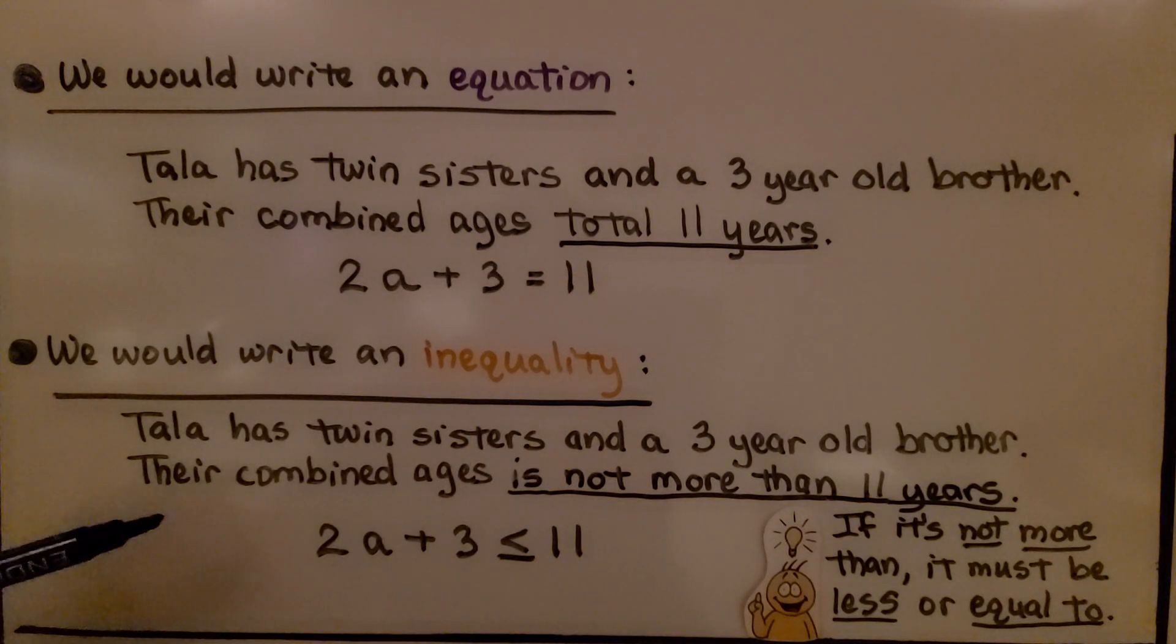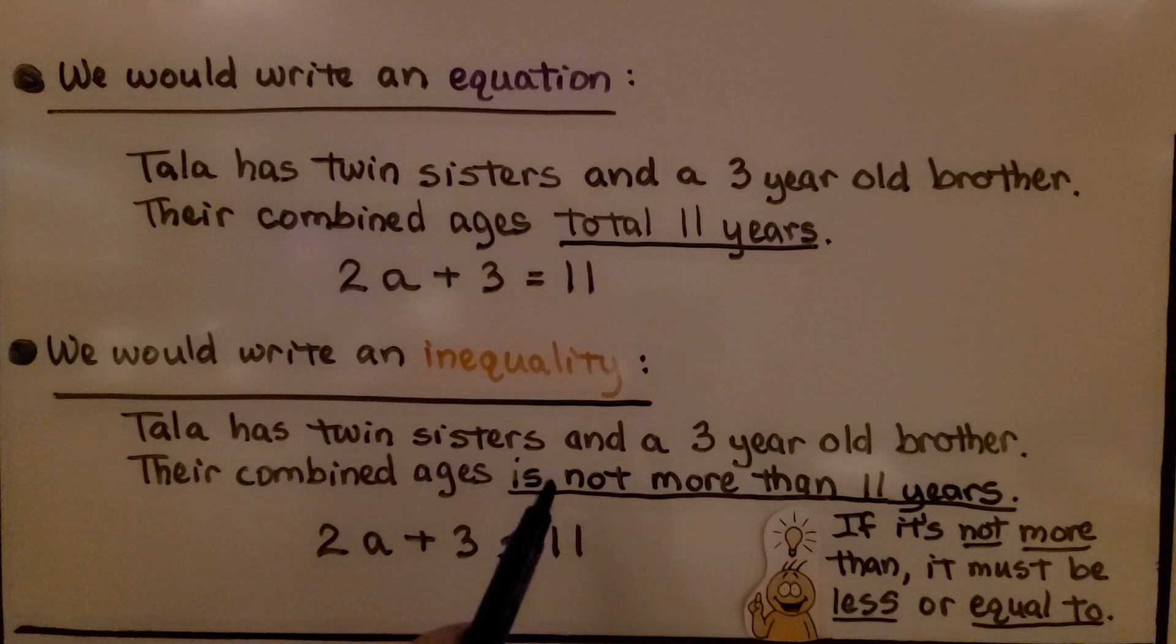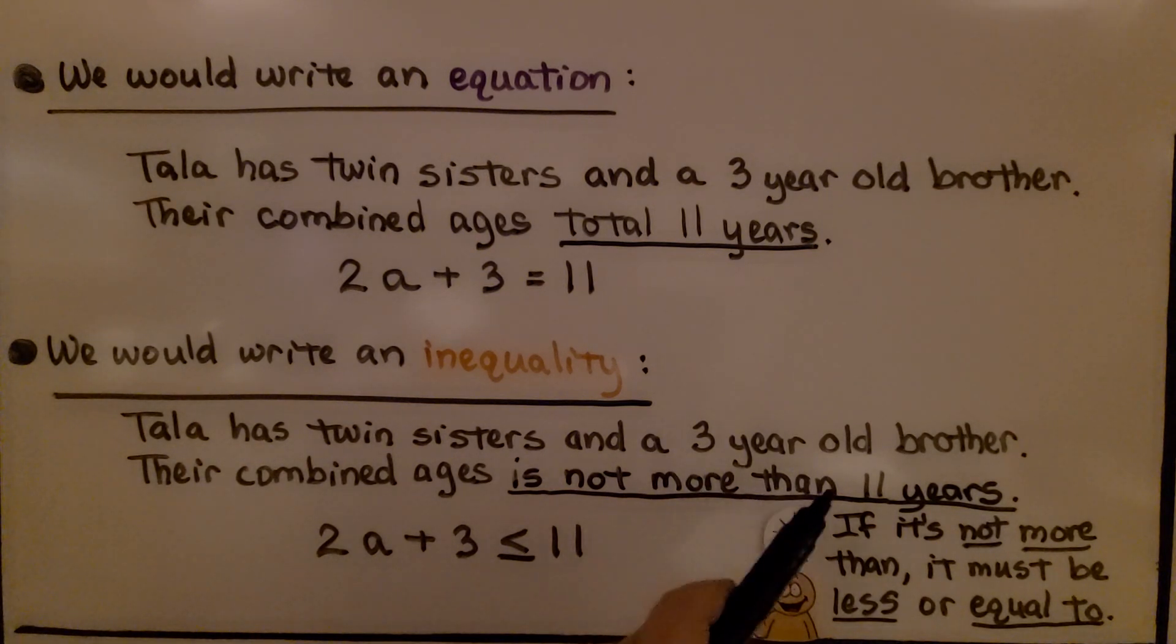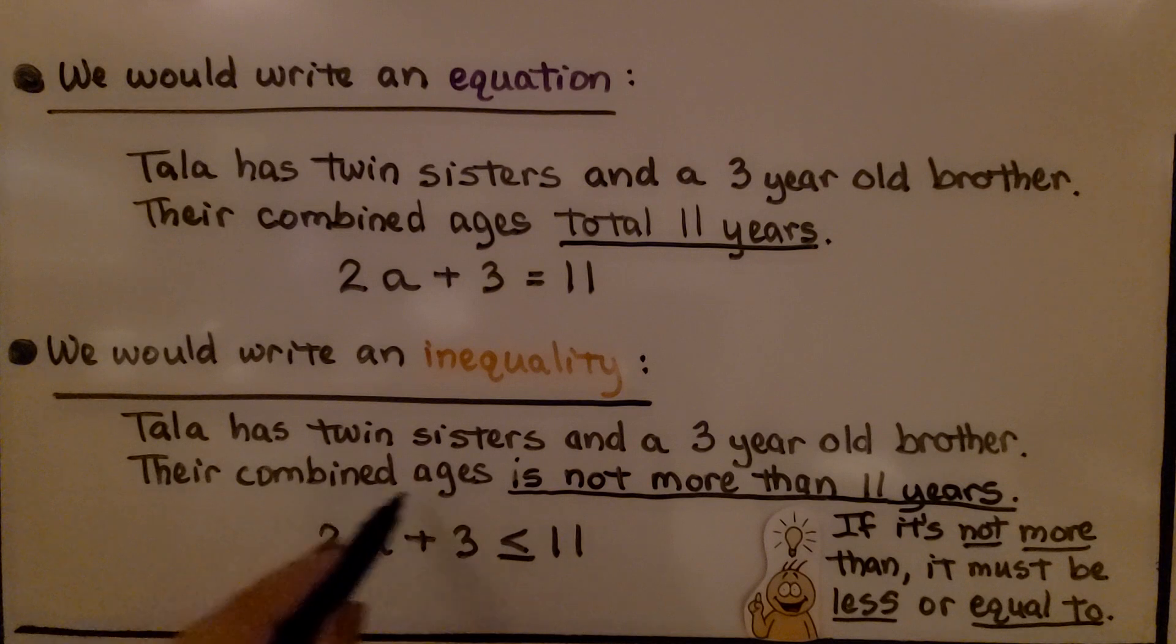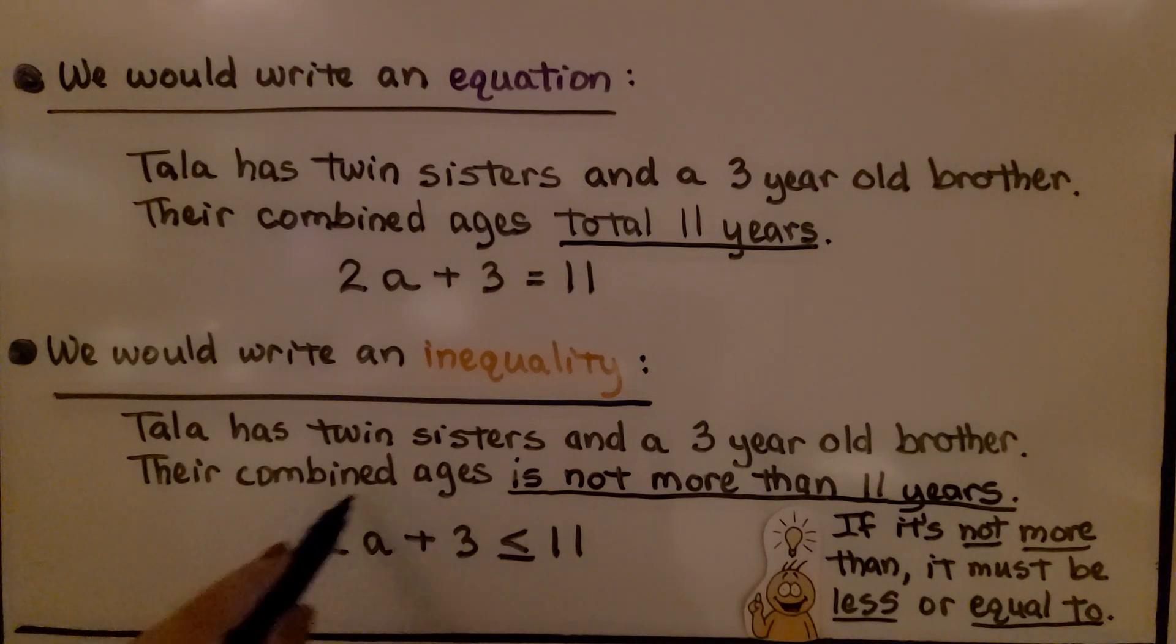For an inequality, Tala has twin sisters and a 3-year-old brother. Their combined ages is not more than 11 years. That means if it's not more than, it must be less or equal to, because it's just not more than 11. We would have 2a plus 3 is less than or equal to 11. So this side of the inequality is not more than 11.